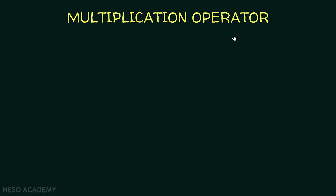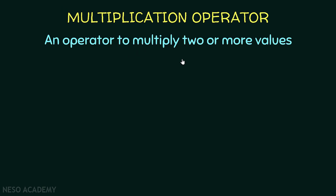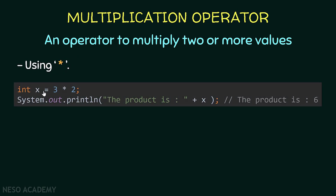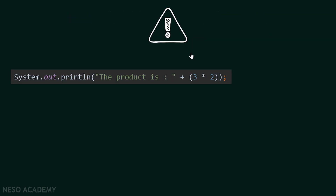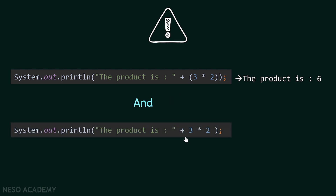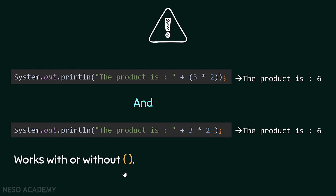Now let's talk about the multiplication operator. It is used to multiply two or more values, and we use the asterisk. For example, x is equal to 3 multiplied by 2, and we are printing x, so we will see 'the product is 6'. Also, we can display it directly by printing 3 multiplied by 2 between parentheses, which gives 'the product is 6'. We can also use it without parentheses and get the same result — so this works with or without parentheses.